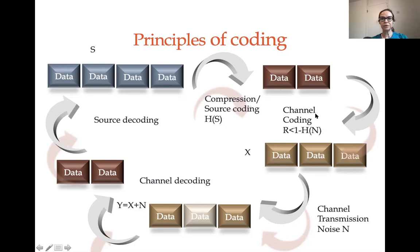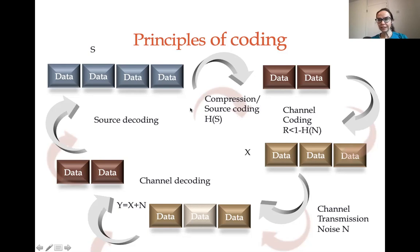The way to think about it is that if I look at this set, which has two to the 400 possibilities, the typical set only has two to the 200 possibilities. Therefore, I'm able to look at the size of that typical set — two to the 200 — and represent it with only 200 bits. The second type of coding is channel coding, where I take the compressed data and do something counterintuitive: I add redundancy.